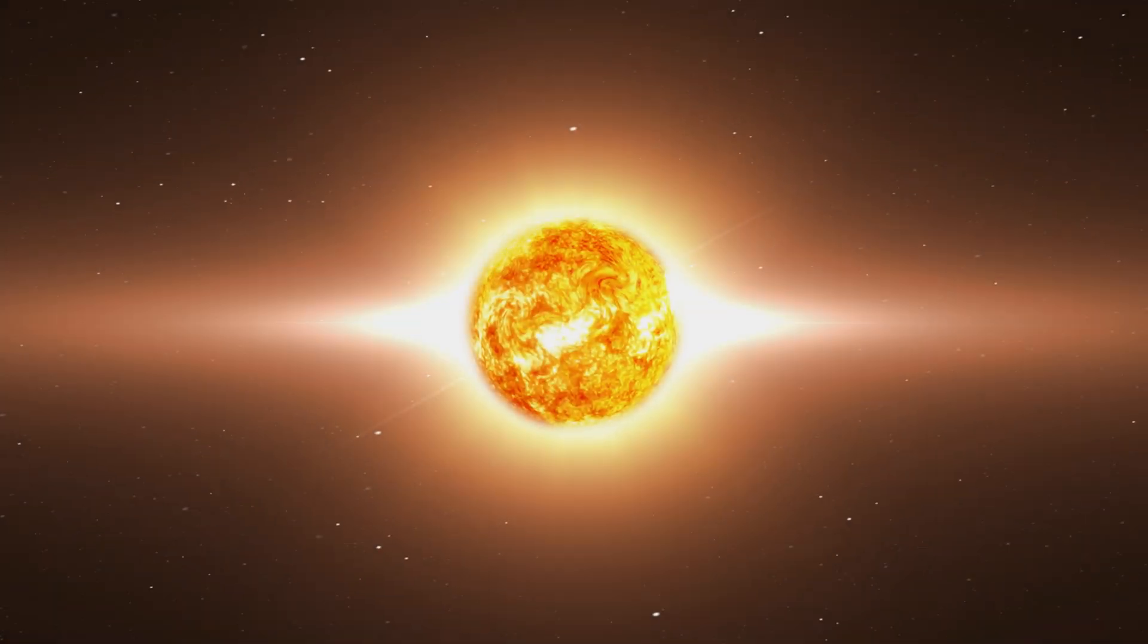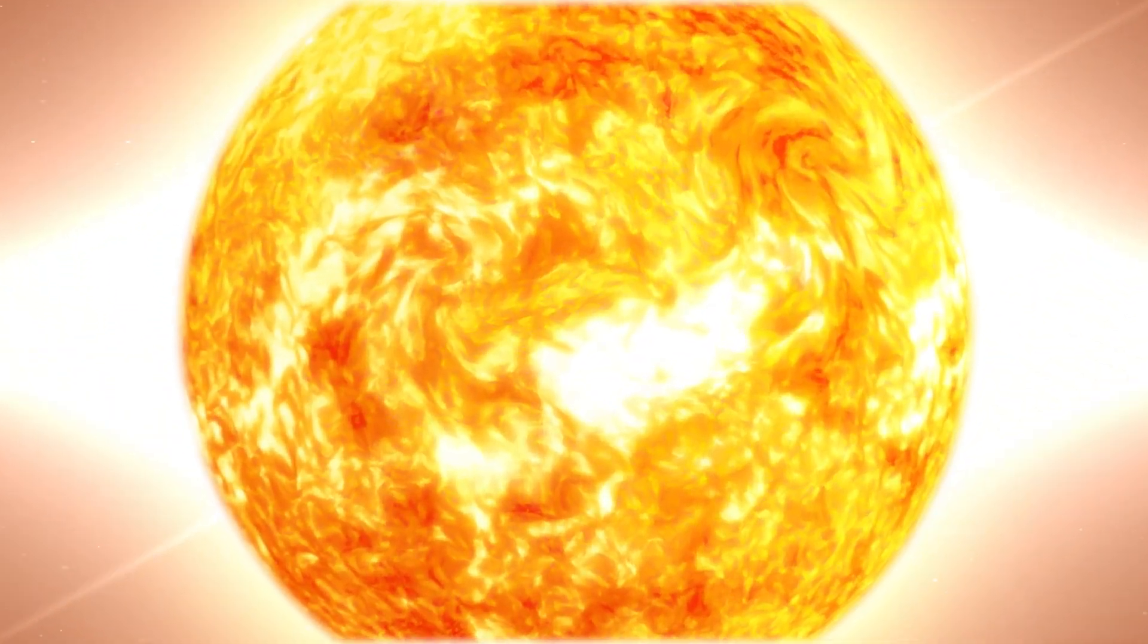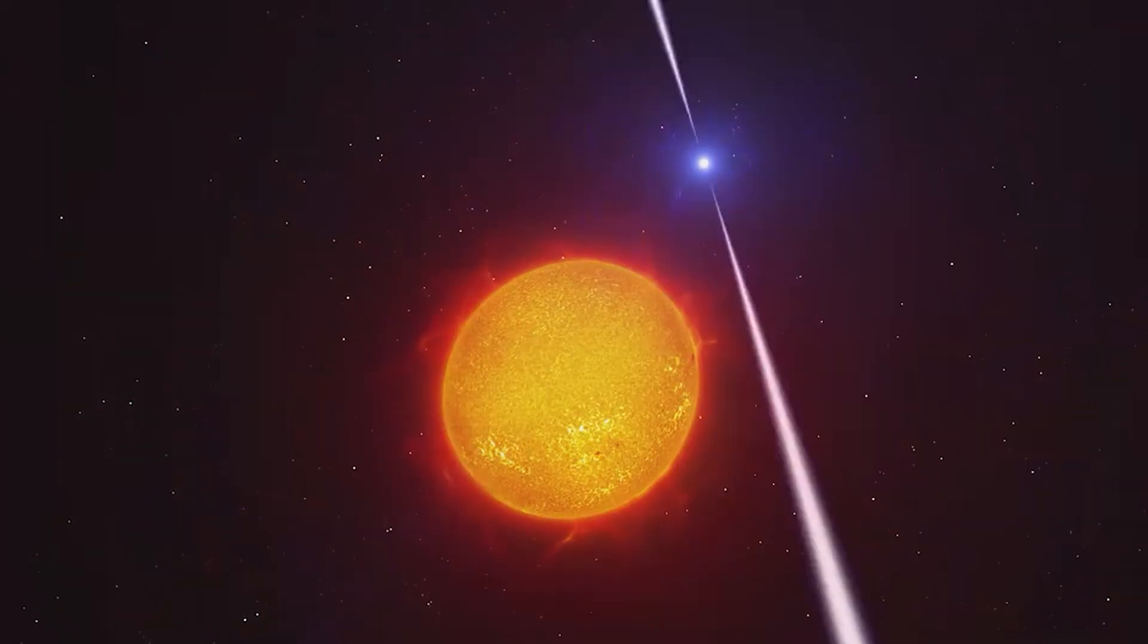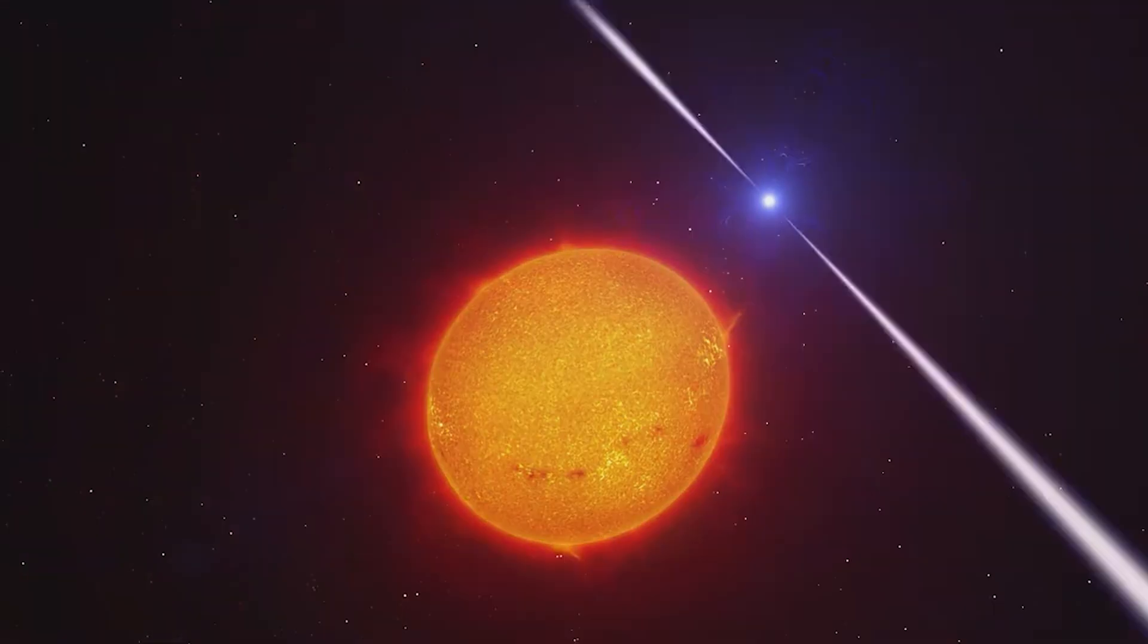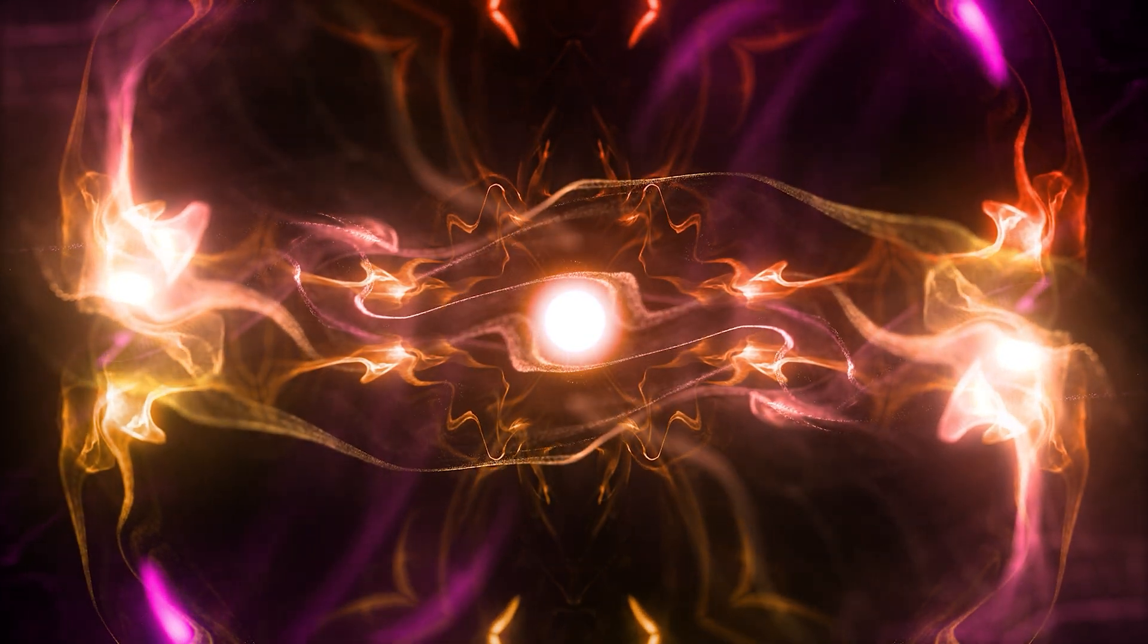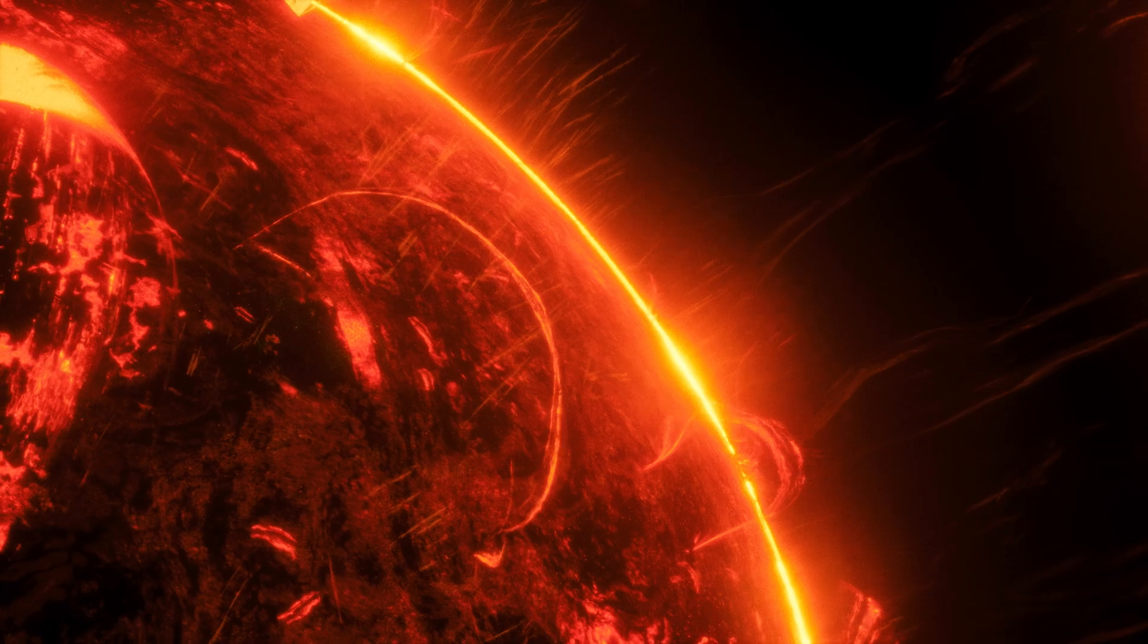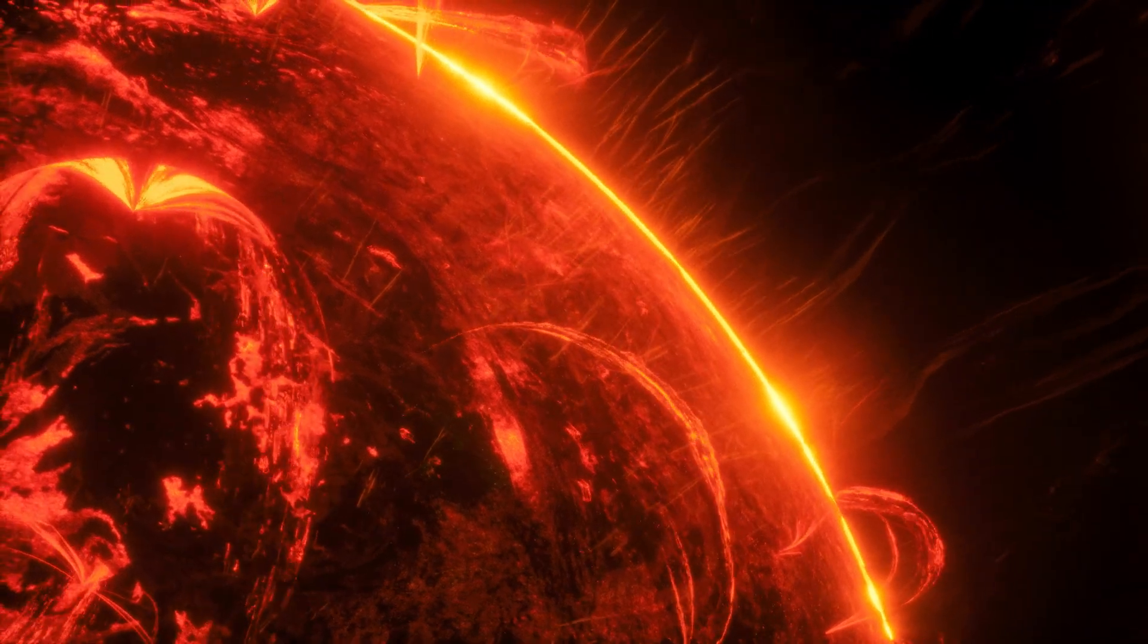But AR Scorpii's show is even stranger. You see, this white dwarf isn't alone. It has a companion, a cooler red dwarf star caught in orbit nearby. Each time the white dwarf's intense beam sweeps over its companion, it lashes the red dwarf with high energy particles and radiation. The poor companion star is struck by a barrage of electrons moving nearly at light speed, causing the entire system to brighten and dim dramatically, in sync with the white dwarf's pulses.